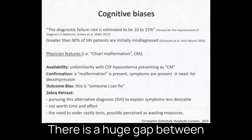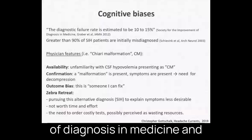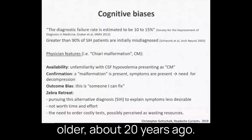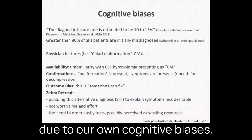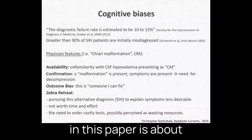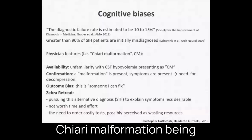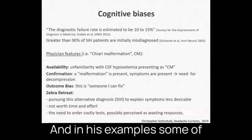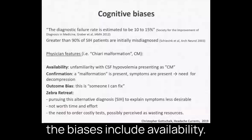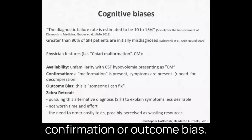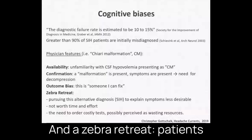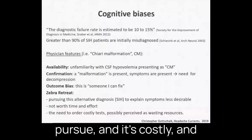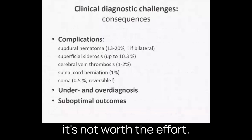There is a huge gap between the 10–15% rate of diagnostic failure in medicine generally and the 90% misdiagnosis rate of CSF leak reported in a study about 20 years ago, though some of that gap may be due to our own cognitive biases. An example cited by Dr. Chris Gocek is CSF leak being misdiagnosed as Chiari malformation based on brain MRI appearance. Biases include availability bias — you have a clear diagnosis — confirmation or outcome bias — there is a malformation and I can fix it — and a zebra retreat, where providers unfamiliar with SIH consider it a less desirable diagnosis to pursue, thinking it is costly and not worth the effort.